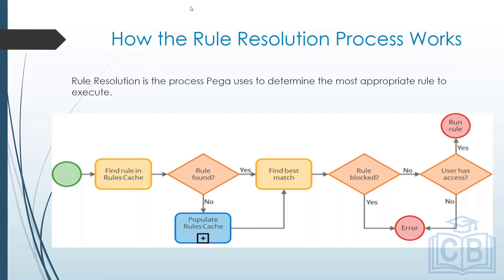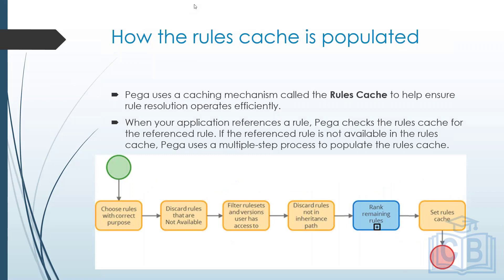This population of the rules cache takes longer the first time, which is why executing rules initially takes more time. Populating the rules cache is itself a separate sub-process within rule resolution, involving six different steps.